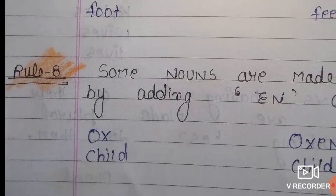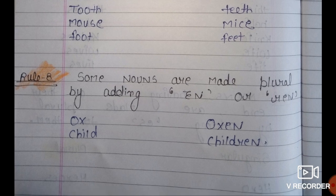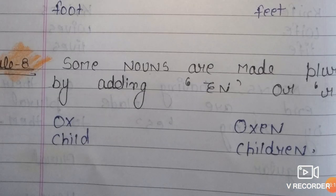Rule number 8: Some nouns are made plural by adding EN or REN. For example, Ox — O, X — when we make the plural we use EN, giving us Oxen. Second example is Child, whose plural is Children.